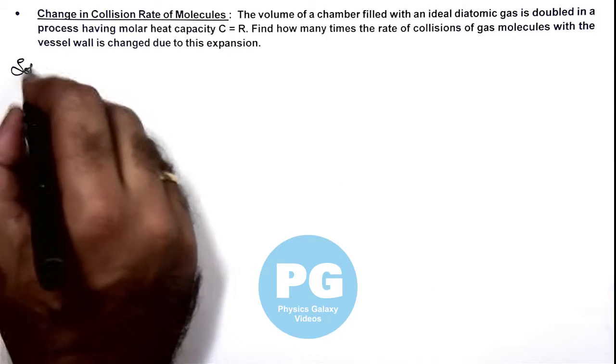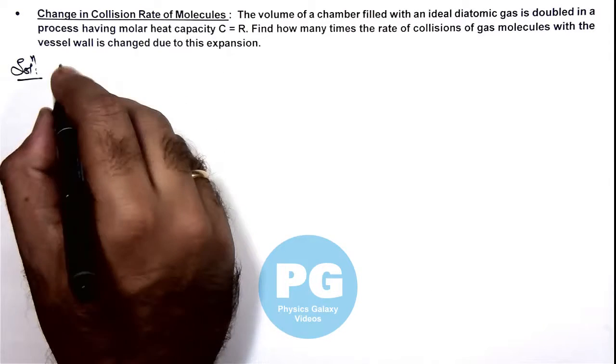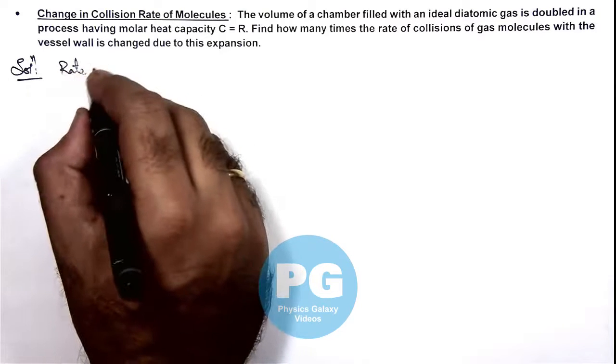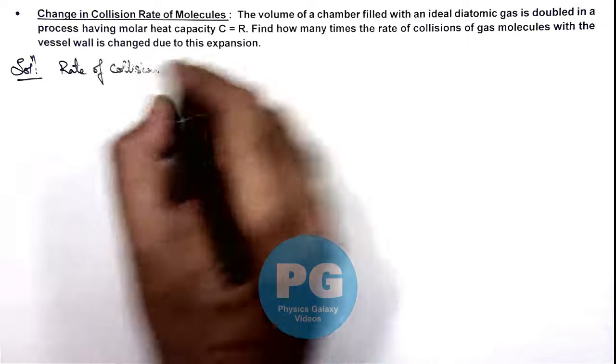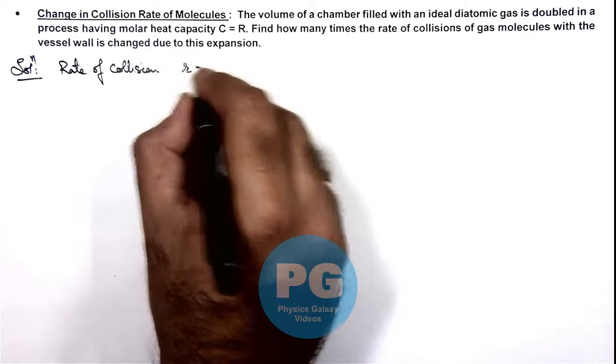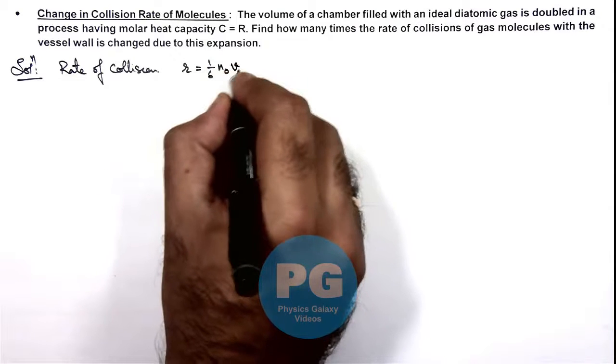So here we can start with the rate of collisions which we already studied in concept videos. That rate of collision can be given as 1 by 6, n not v rms.